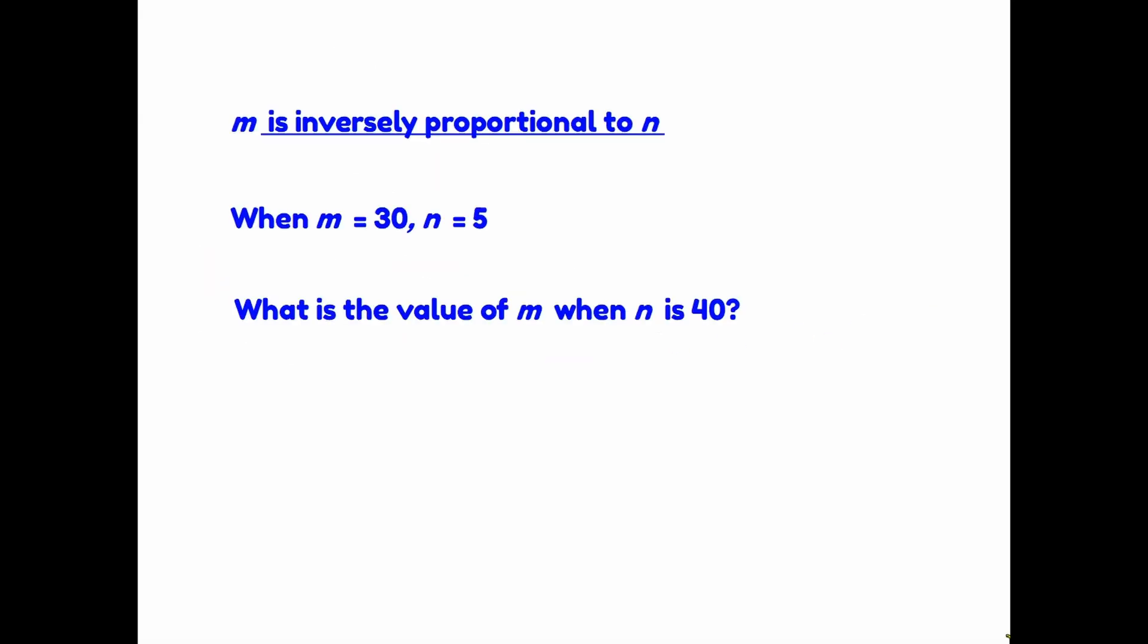Let me show you an example of that before we finish. Here we are. We are being told that m is inversely proportional to n. Remember what that means? As one goes up, the other goes down. So if m is multiplied by two, n divides by two. If m is multiplied by ten, n divides by ten, and vice versa. We're then being given a situation where we are told what two values are of m and n. It's saying that when m is equal to 30, n is equal to five. Then we're asked the question, what's the value of m when n is 40?